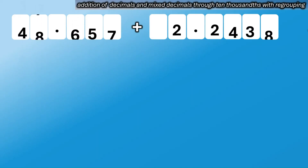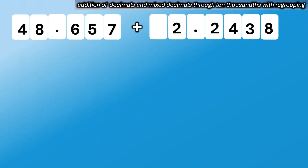Another example — this time, addition of mixed decimals through 10-thousandths with regrouping. We have 48 and 657 thousandths plus 2 and 2,438 ten-thousandths.